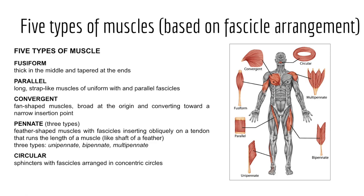Examples of parallel muscles include the sartorius of the anterior thigh and the rectus abdominis. We have convergent muscles — fan-shaped muscles that are broad at the point of origin and converge toward a narrow insertion point. Such muscles are generally strong because their fascicles exert tension on a relatively small insertion point. An example is the pectoralis major muscle in the anterior chest.